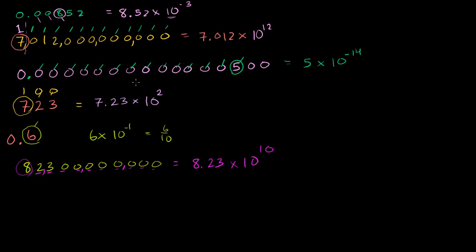I think you get the idea now — it's pretty straightforward. More than just being able to calculate this, I want you to understand why this is the case, and hopefully the last video explained it. If it doesn't, just multiply it out — literally multiply 8.23 times 10 to the 10 and you will get that number. Maybe try it with something smaller, like 10 to the fifth.